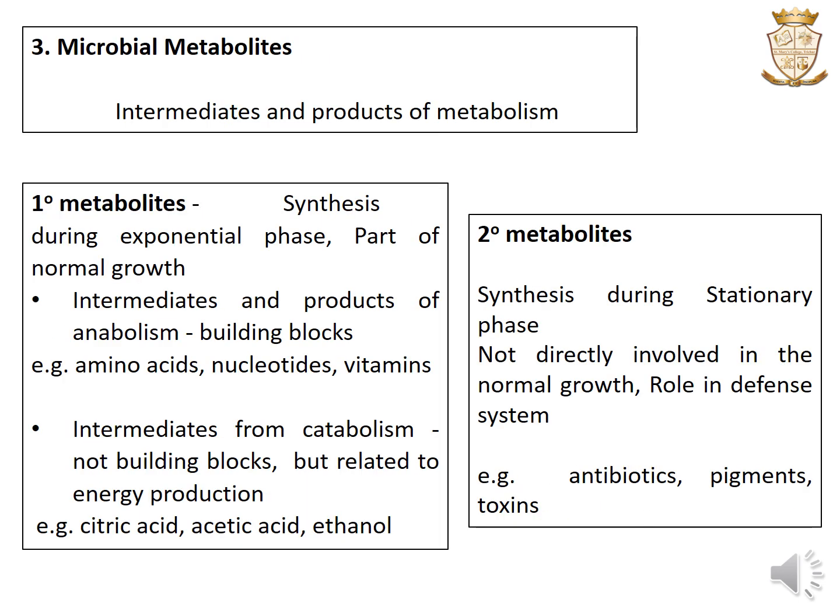The third type of fermentation is where the product is a microbial metabolite. Microbial metabolites are intermediates and products of metabolism. There are two types: primary metabolites and secondary metabolites. Primary metabolites are synthesized during the exponential phase of growth, and their synthesis is part of the normal growth of a cell.